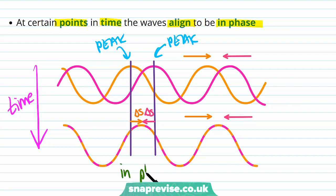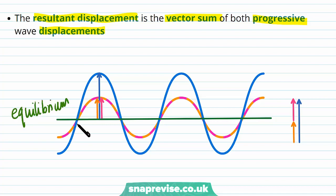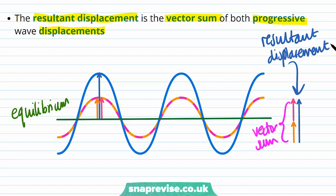The resultant displacement is the vector sum of both progressive wave displacements. The green line is our equilibrium position. When the waves are aligned in phase, each wave has its own displacement shown by the pink and orange arrows. Since both displacements are in the same direction, we add them together to get the resultant displacement shown by the blue arrow.